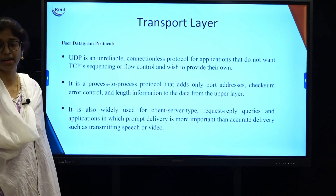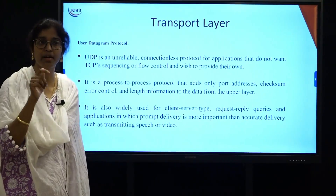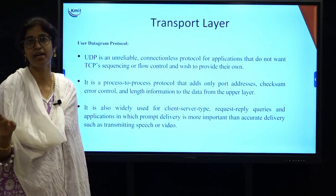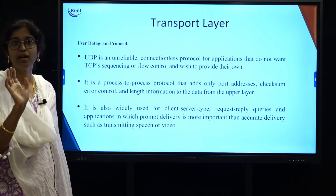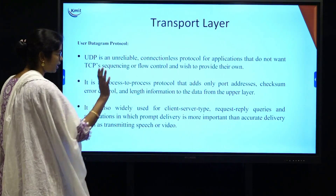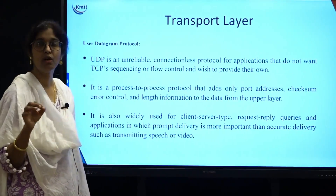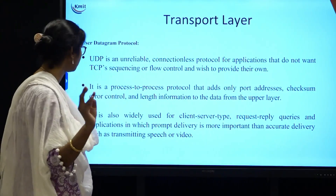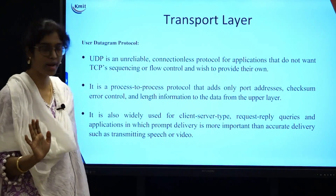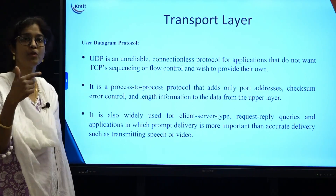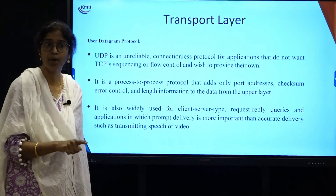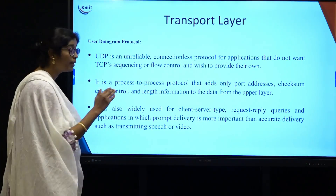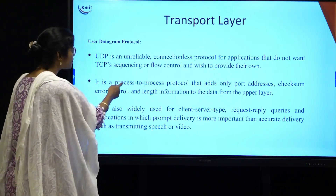The second transport layer protocol is UDP — User Datagram Protocol. The term datagram in the name implies that it is also an unreliable, connectionless service. UDP provides process-to-process delivery using port addresses and error control using checksums. It is used where TCP sequencing and flow control are not needed — situations where fast or prompt answers are preferred over accurate ones, such as client-request type connections with a request-reply protocol.